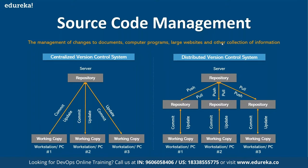Version control systems are classified into two categories: centralized and distributed. Centralized is the older approach with a two-layer architecture — a working copy and a remote repository. In centralized version control, if you want to upload code to the remote repository, you put a lock on the project — similar to how SharePoint works — so no other developer can make changes until the lock is released. This was a major drawback of centralized VCS.